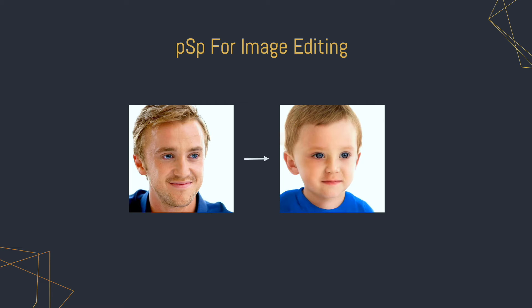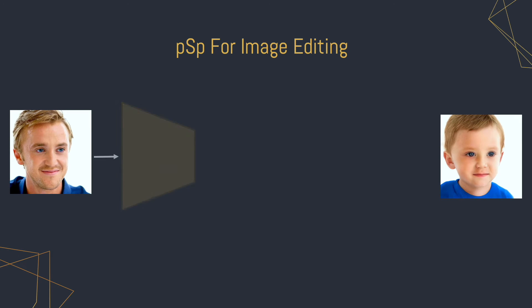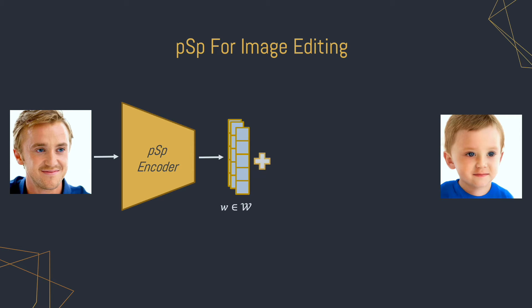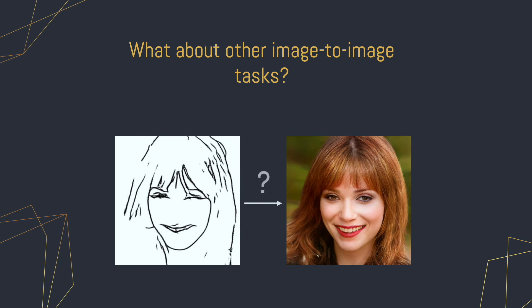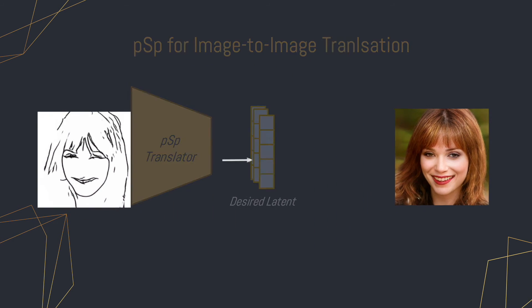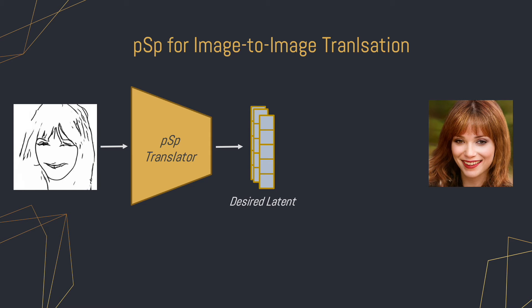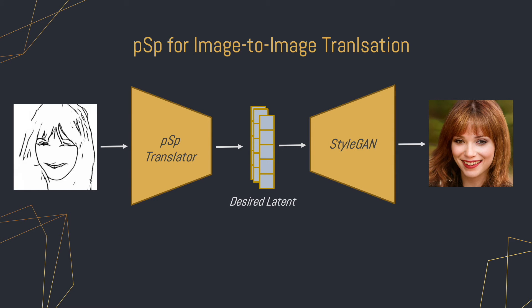Now that we have a powerful encoder, what can we do with the encoder representations? Say we want to generate an image of this individual as a child. We can invert the image into StyleGAN's latent space using PSP, edit the latent in a semantically meaningful manner to obtain a new code, and pass the edited code to StyleGAN to generate the transformed image. But say we wanted to transform a sketch into a realistic image. Here, we can't simply encode the sketch into the latent space and manipulate the latent code to obtain the desired transformation. Instead, our key insight is that we can directly encode the sketch into the desired latent code corresponding to the realistic image, even when the input and output are not from the same input domain.